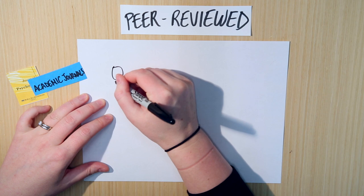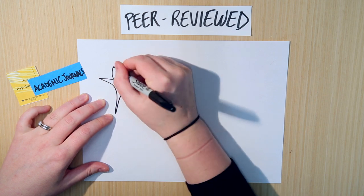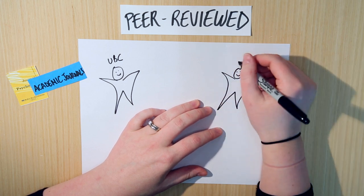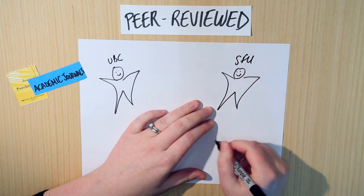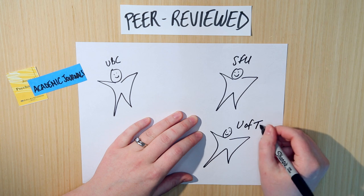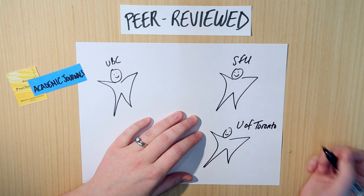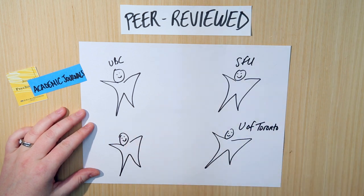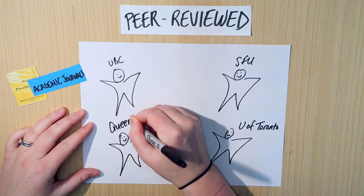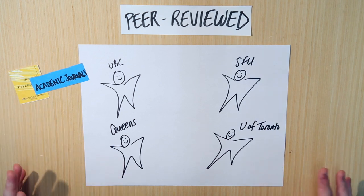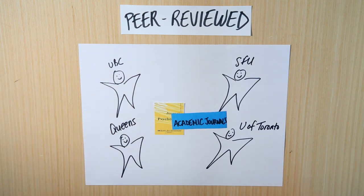Let's say you've got a psychologist working at UBC, another psychologist working at SFU, a third one working at University of Toronto, and a fourth researcher working at Queen's. They're all working in psychology, but they all work at totally different places. So how do they communicate with each other?